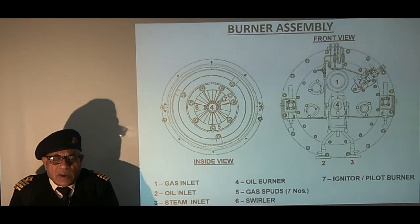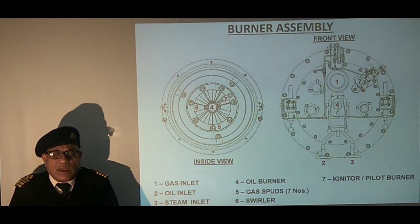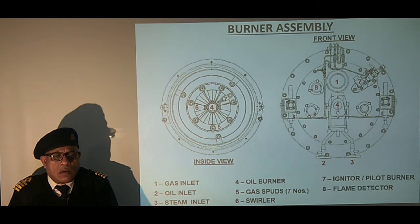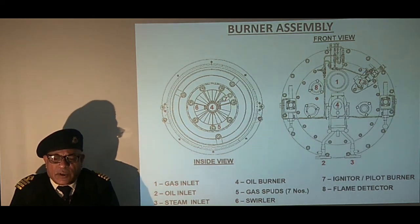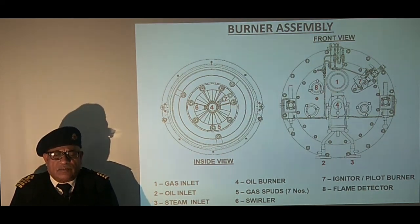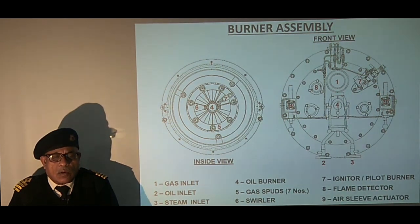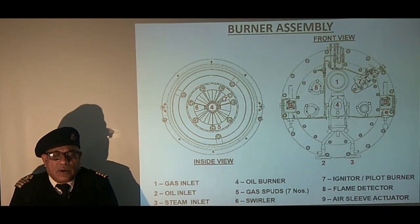For lighting of the burner, a pilot burner of pressure jet type is used for which diesel oil is supplied by the ignition pump at 6 bar. A spark is provided by the igniter through high voltage discharge. A flame detector monitors the flame and shuts down the oil and gas burner if the flame is extinguished. Pneumatically operated cylinders are used to shut off the combustion air after stopping the burner.